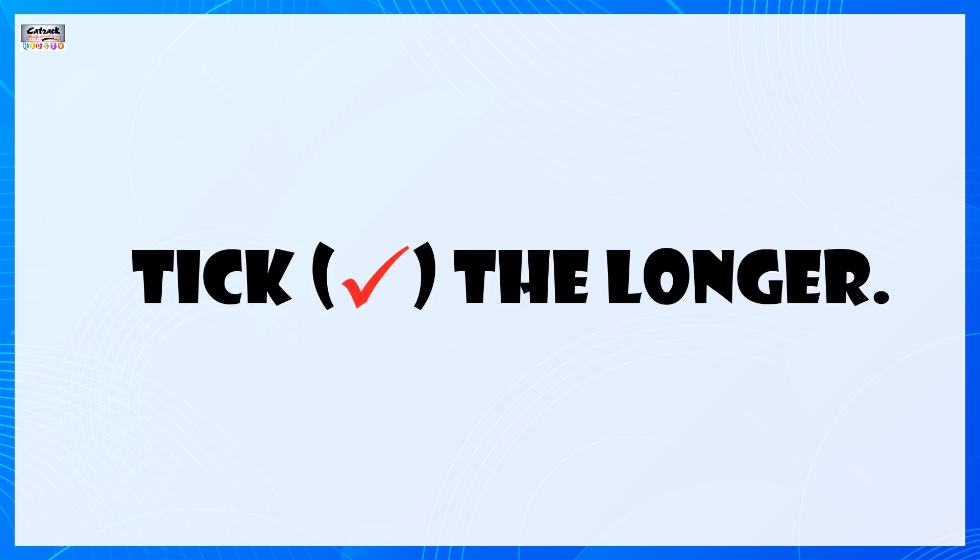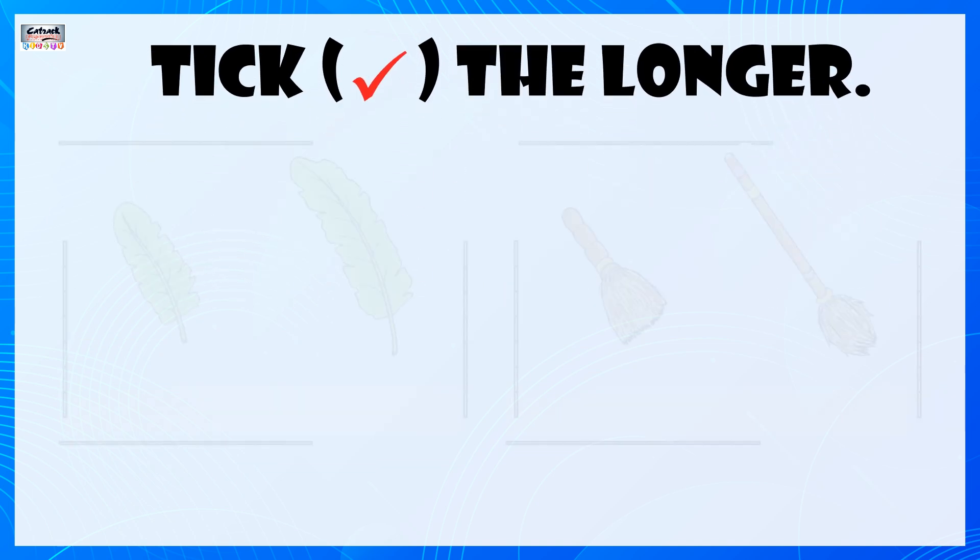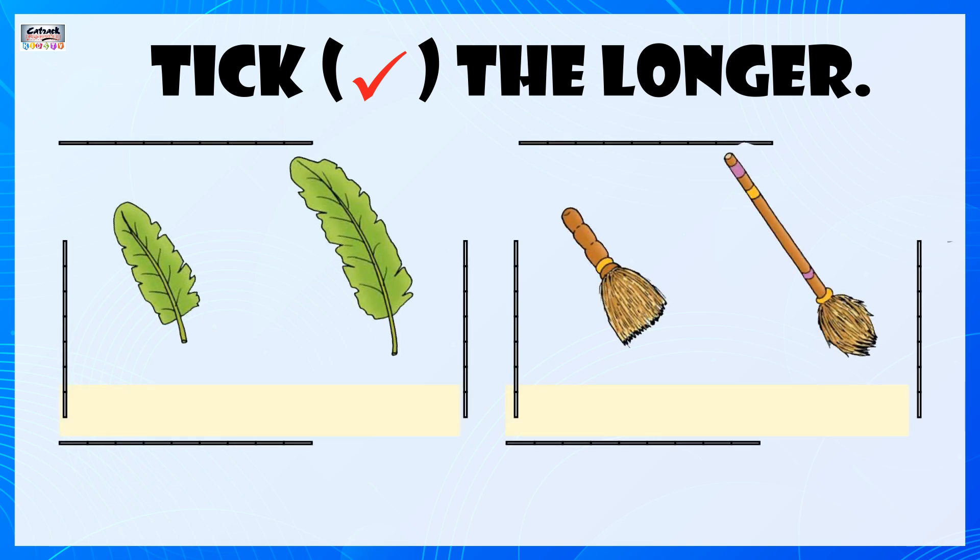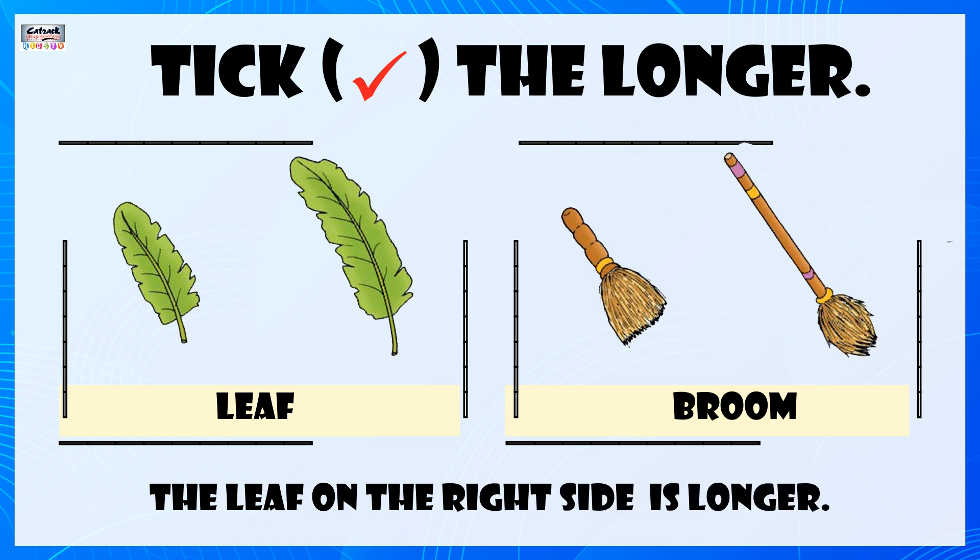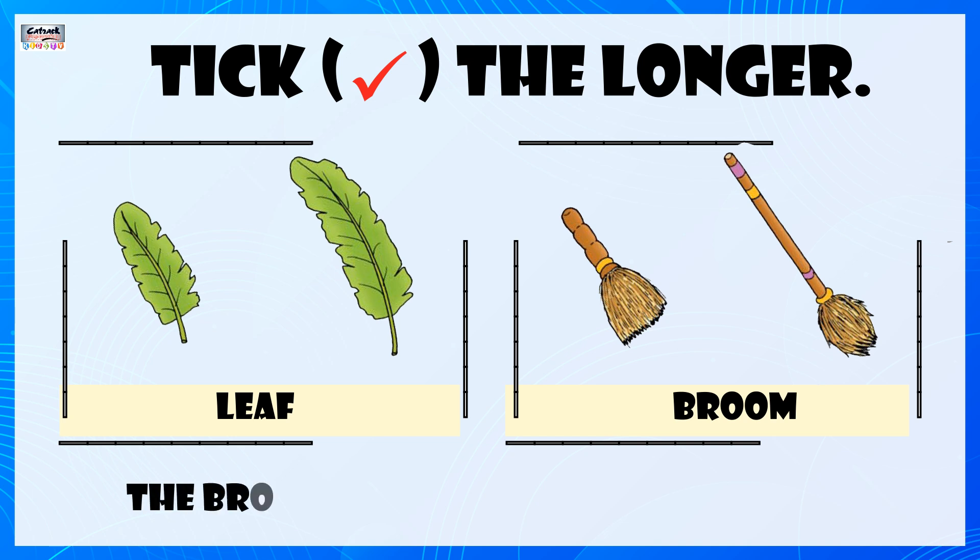Tick the longer. The leaf on the right side is longer. The broom on the right side is longer.